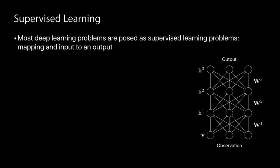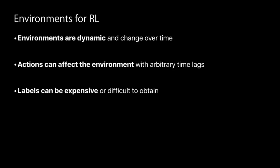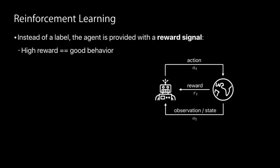We've seen a lot of successes in supervised learning. Most deep learning successes come from basically mapping inputs to outputs. In traditional supervised learning, the environment is typically static, and outputs are assumed to be independent of one another — labeling one image doesn't really impact the other. In reinforcement learning, environments are typically dynamic, they change over time. Actions can affect the environment with arbitrary time lags — an action today can really impact your future reward. Labels can be very expensive or difficult to get, such as trying to get the right actuations of a swimming octopus.